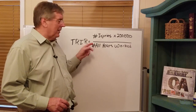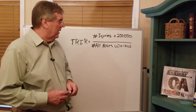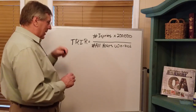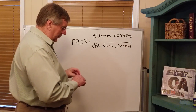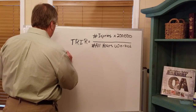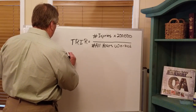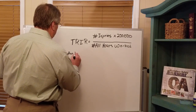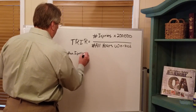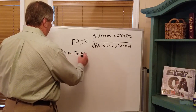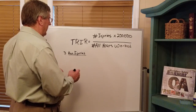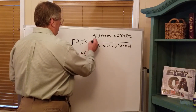Those are the only two pieces of information you need. Let's do a sample calculation. Say we have a widget manufacturing company that last year sustained three recordable injuries — three people cut themselves and got stitches. Those are recordable injuries, and that is the number that goes in the numerator.